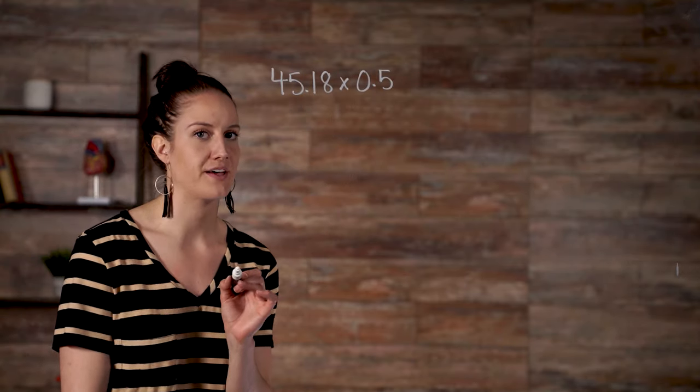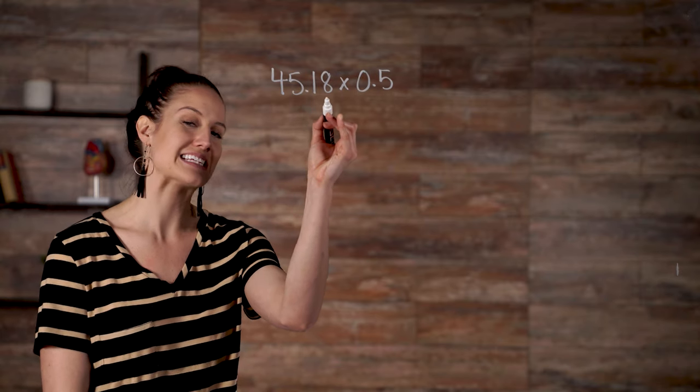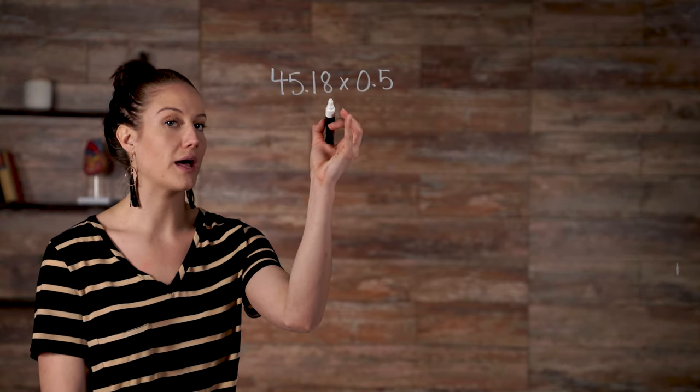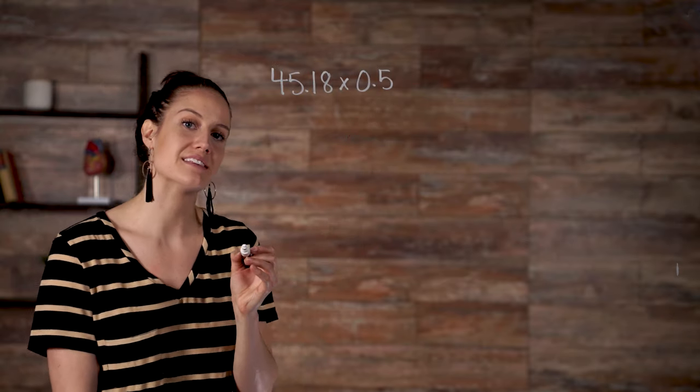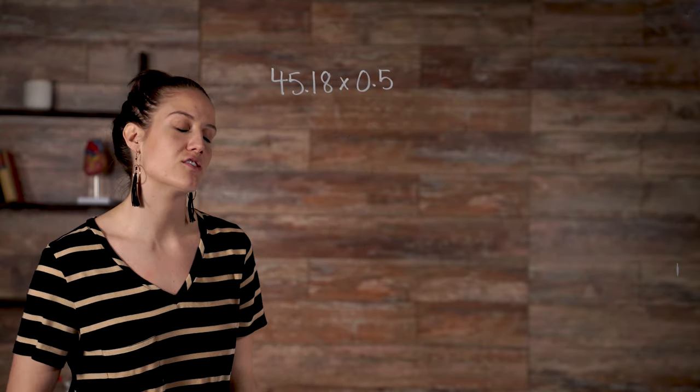Remember place value. That means 45 and 18 hundredths multiplied by 0.5 or five-tenths. So let's figure this out.